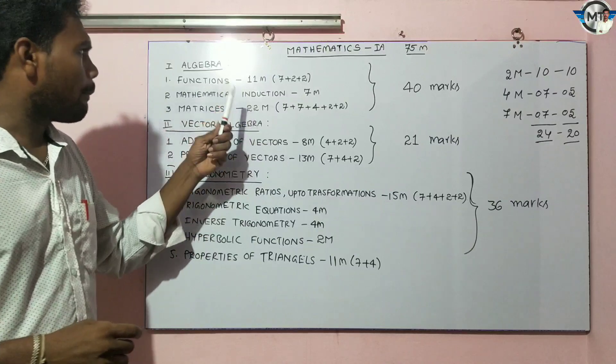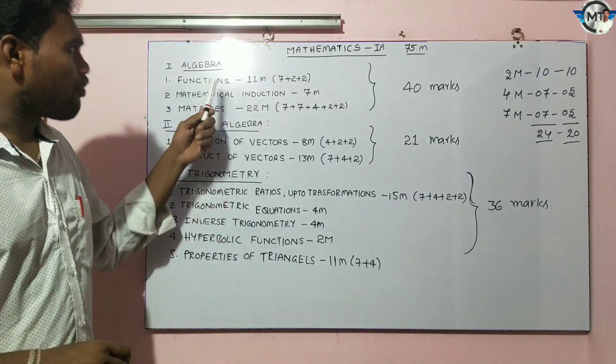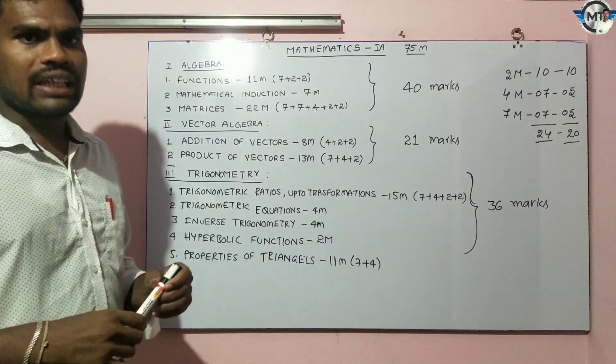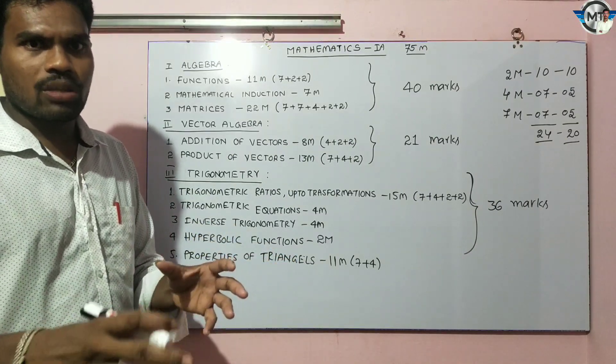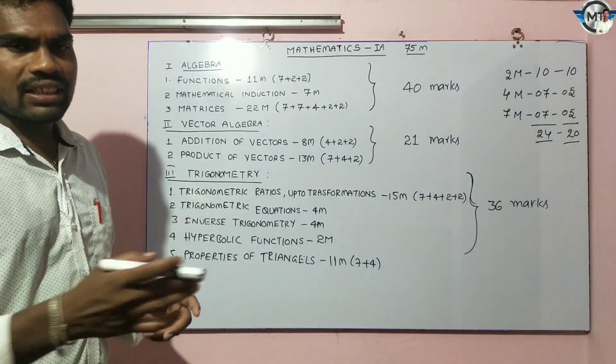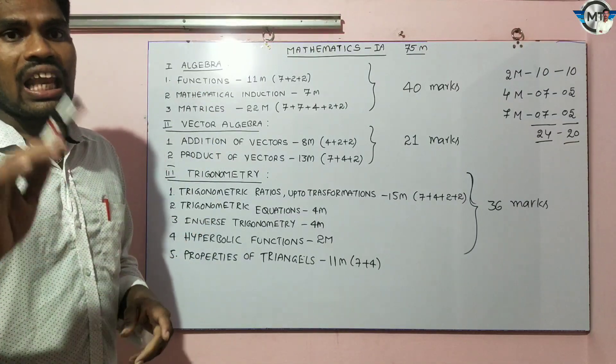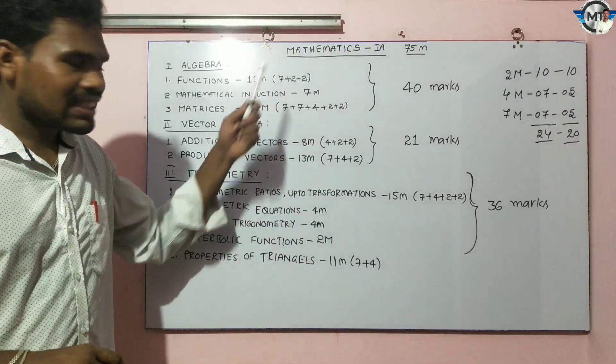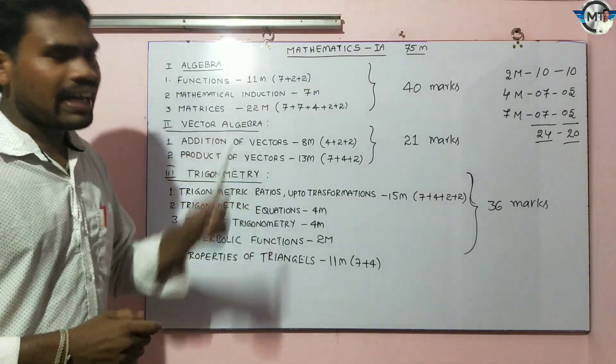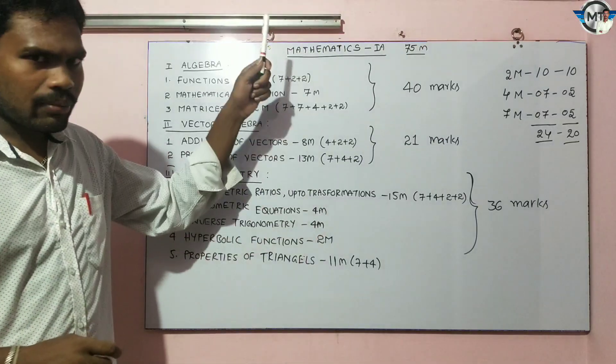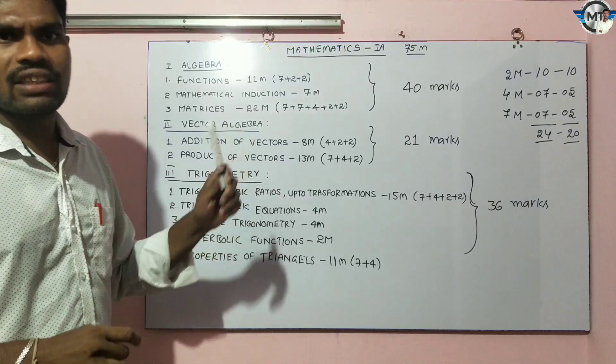In Mathematics A paper, these three subjects will be covered in different sections. The algebra section includes multiple topics, and vector algebra carries marks distributed across question types. Mathematics A paper marks will be carried across the semester.